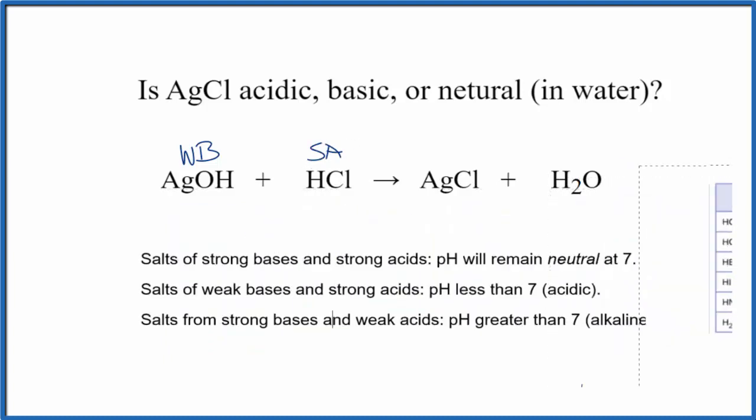And we have the strength of the acid and the base. Now we can use the rules. We're looking for a weak base and a strong acid. Here's a weak base and a strong acid. And the rules tell us pH will be less than 7, so the solution will be acidic.